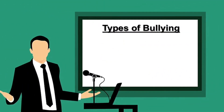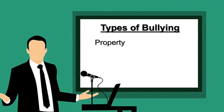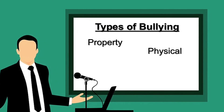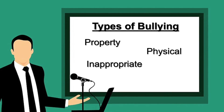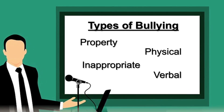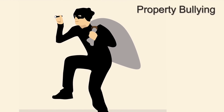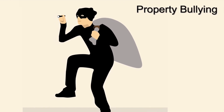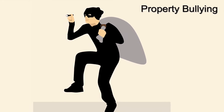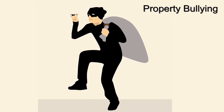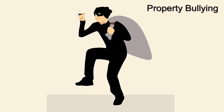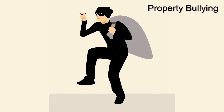We'll be talking about the different types of bullying. We have property bullying, physical bullying, inappropriate bullying, and verbal bullying. Property bullying is anything that involves hiding belongings, theft, arson, extortion, vandalism, or destruction. This can involve a situation where a student may leave class and come back to find their things missing, stolen, or vandalized.